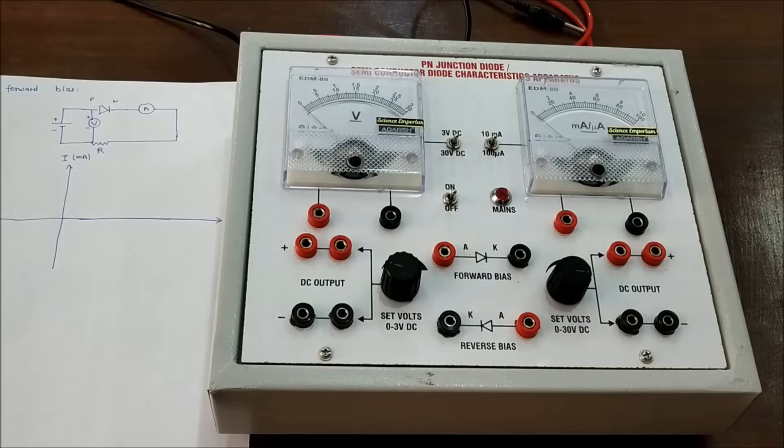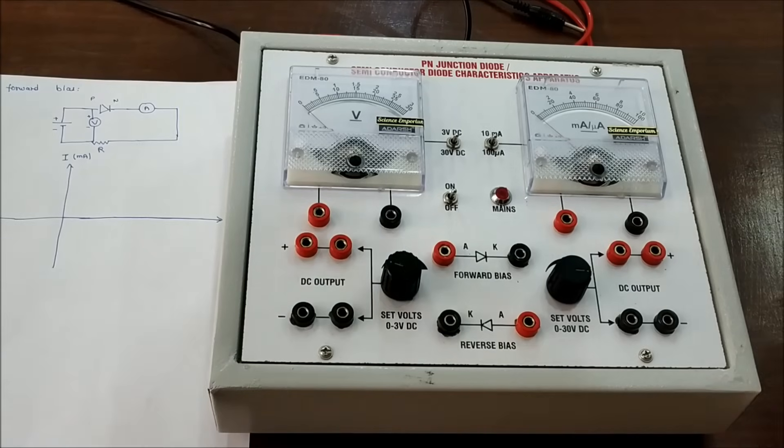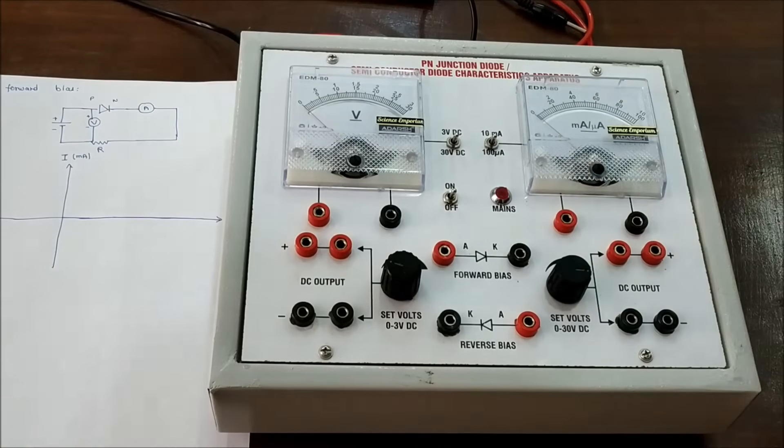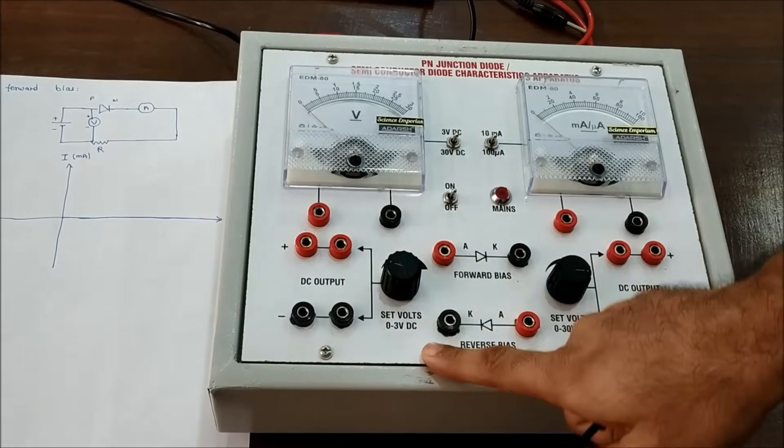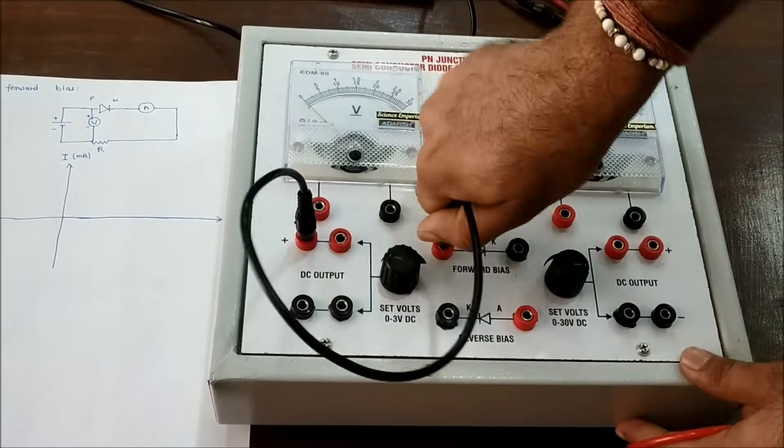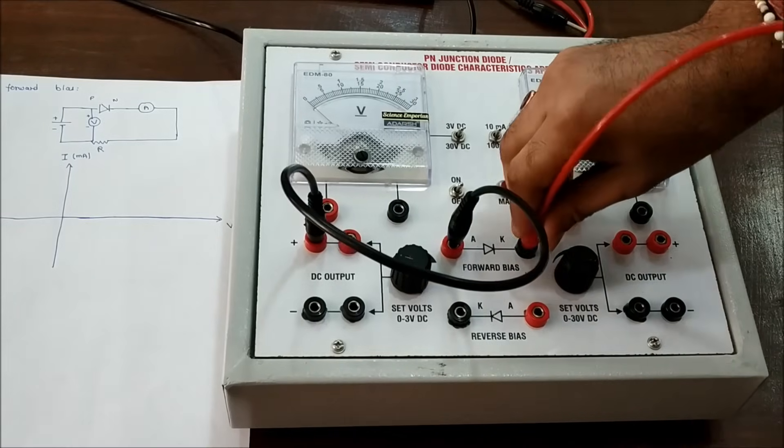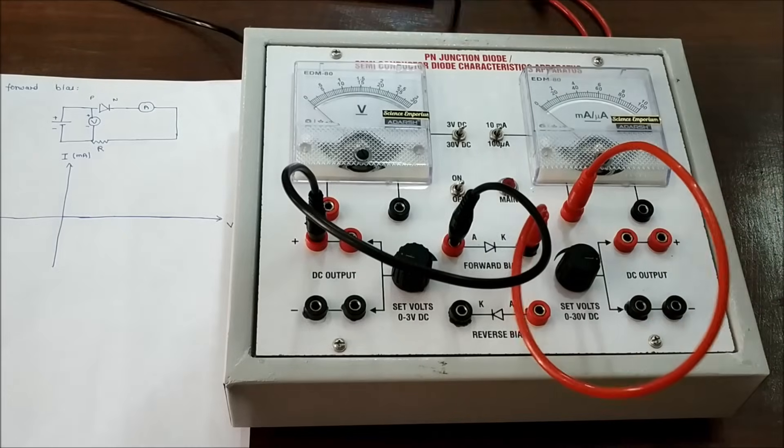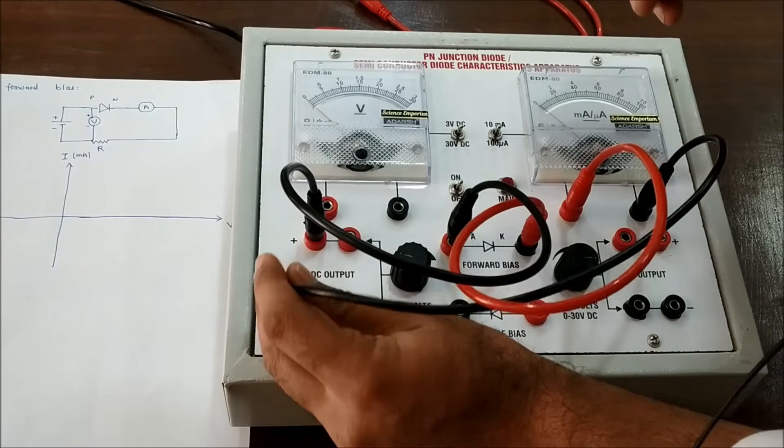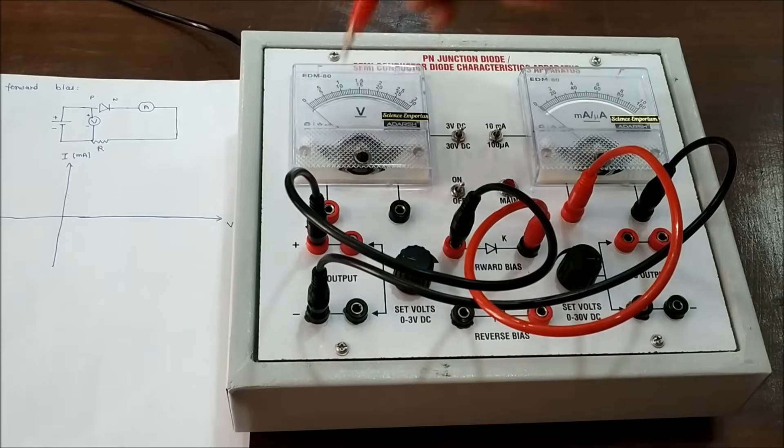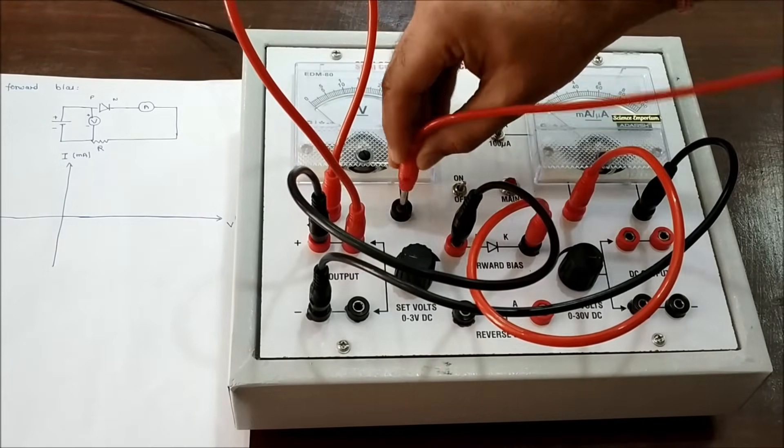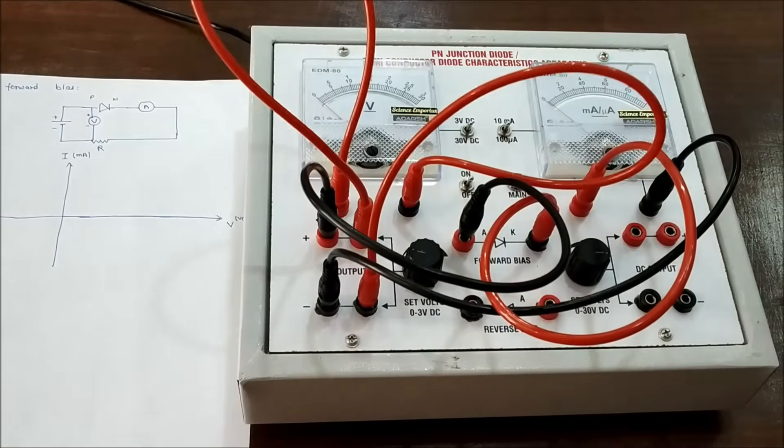First we make connections. As we check our circuit diagram, we have the positive connected with the P side of diode. So it is our 3 volt voltage source, we connect this positive to the P side. And from negative we connect our ammeter, this ammeter goes back into the negative side of our voltage. And parallelly in our circuit we connect this voltage source with our voltmeter.